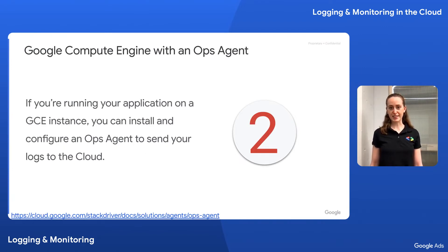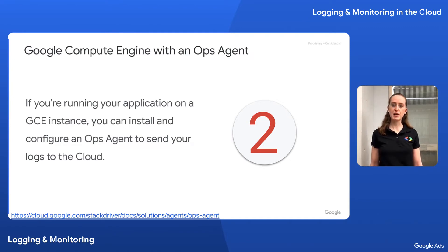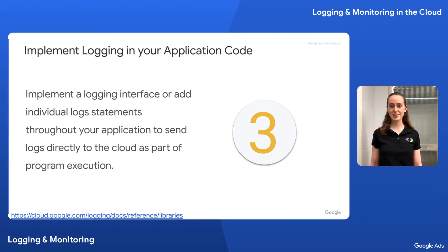Similarly, using Google Compute Engine to run your application allows you to install what's called an Ops Agent, which can be configured to send your logs to Google Cloud Logging and your metrics to Google Cloud Monitoring. The Ops Agent handles system logs and metrics collection by default and lets you specify additional custom log files and parsing logic.